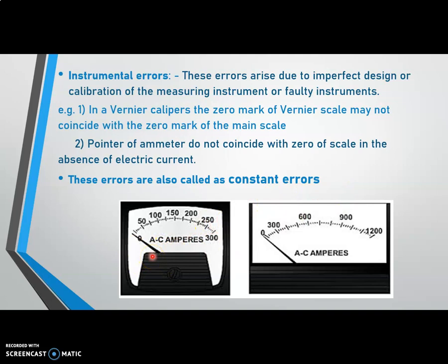This figure shows faulty ammeters. The pointer of the ammeter is not exactly at the position of zero — that is, the starting of the scale — it is just beyond the zero of the scale. Similarly, in another case, the pointer does not coincide with zero of the scale even in the absence of electric current. These ammeters are faulty because even with no current flow, the pointer does not match the zero, giving a constant error in the measurement of electric current. Such type of error is called instrumental error.